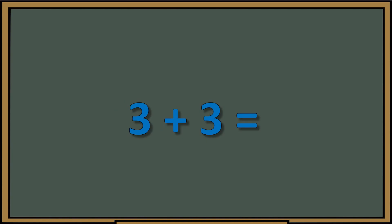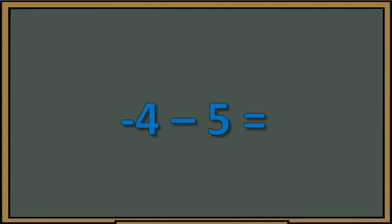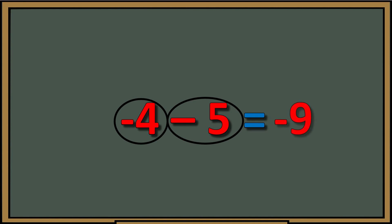This next one is pretty easy but I'm still using the strategy. Circle the number with the sign in front; circle the number with the sign in front. Both of them are good guys, so they add up and give us six. Next, negative four minus five: circle each number with its sign. Both are groups of bad guys — they're friends, they add, giving us negative nine.